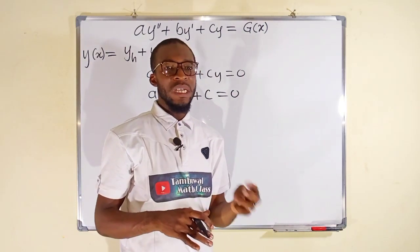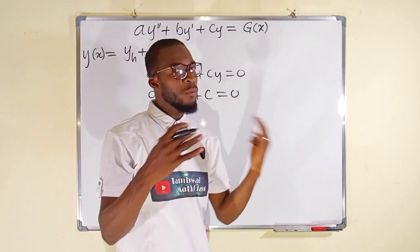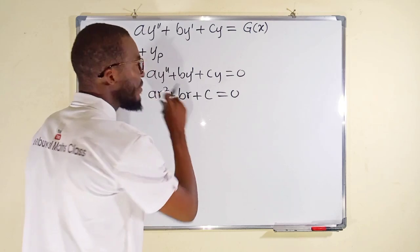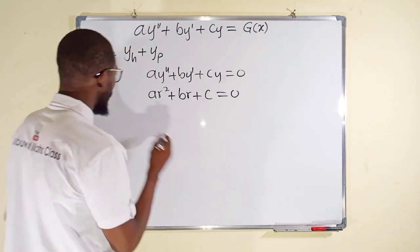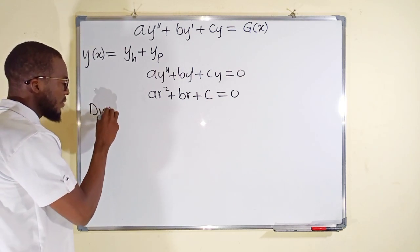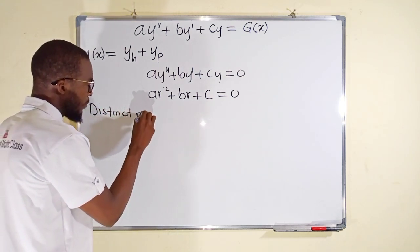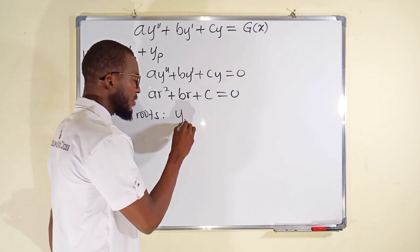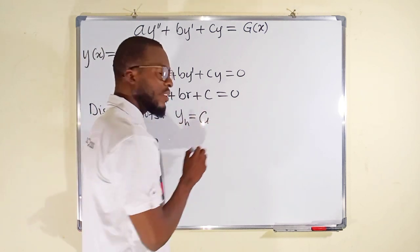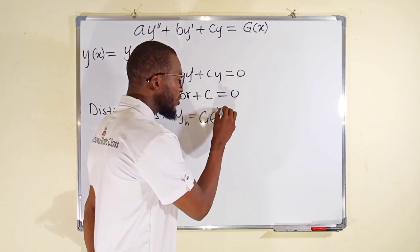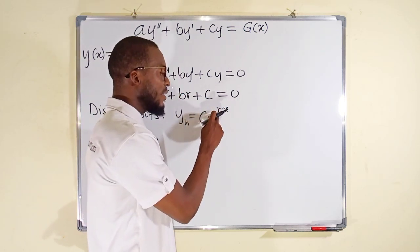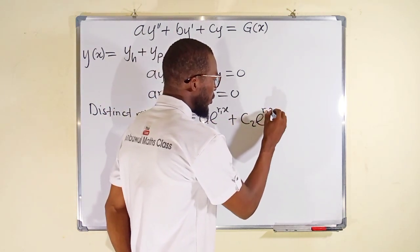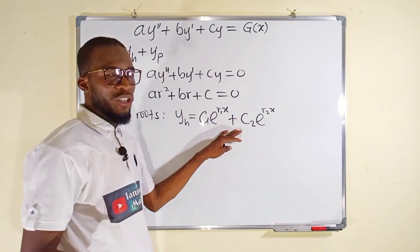There are three forms of roots: real and distinct, real and equal, and complex. If you obtain real and distinct roots — two different solutions — the general solution to the homogeneous type will be: c1 multiplied by e to the r1 x, plus c2 multiplied by e to the r2 x.